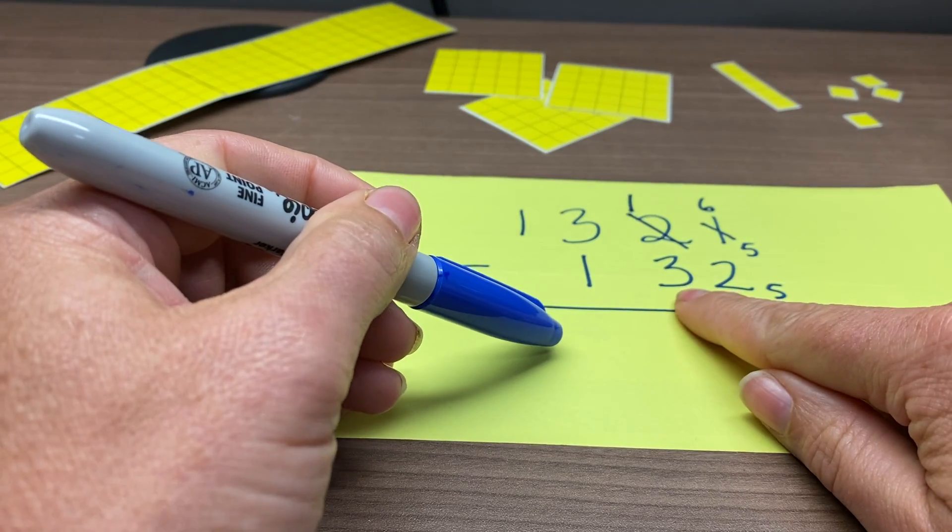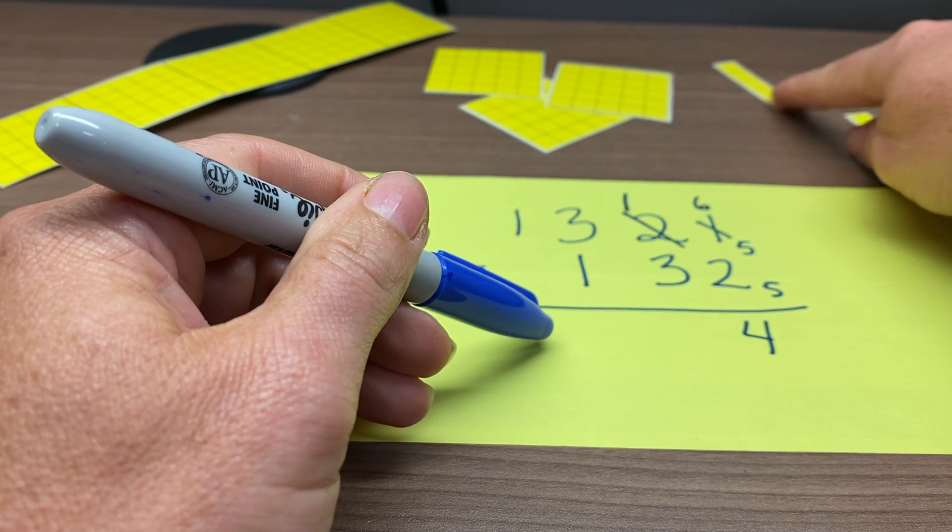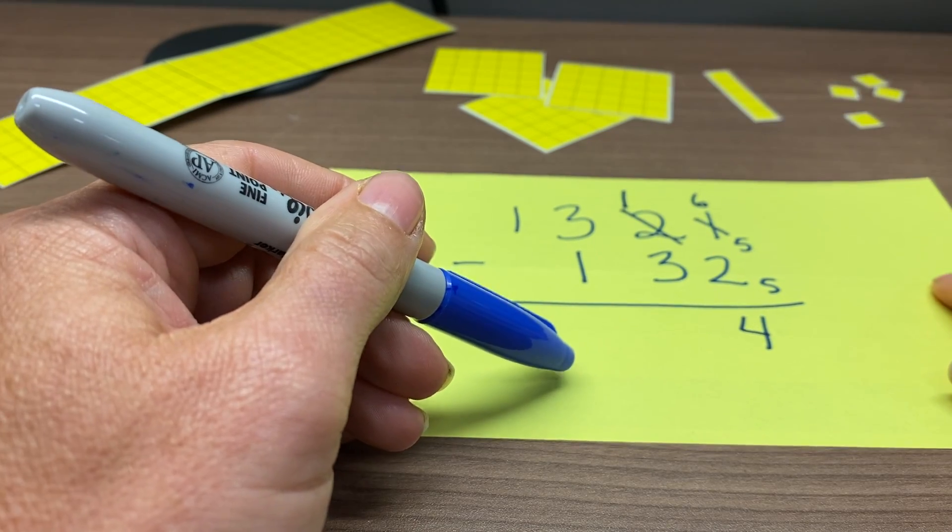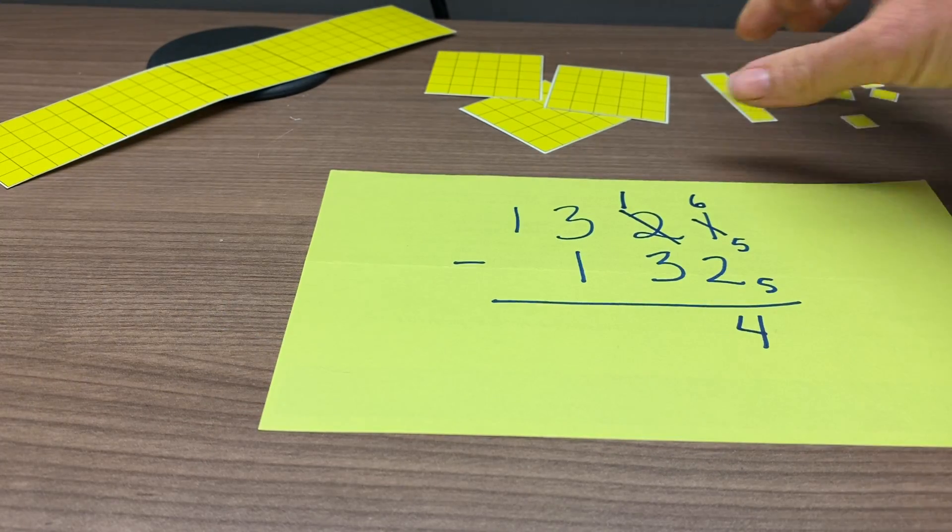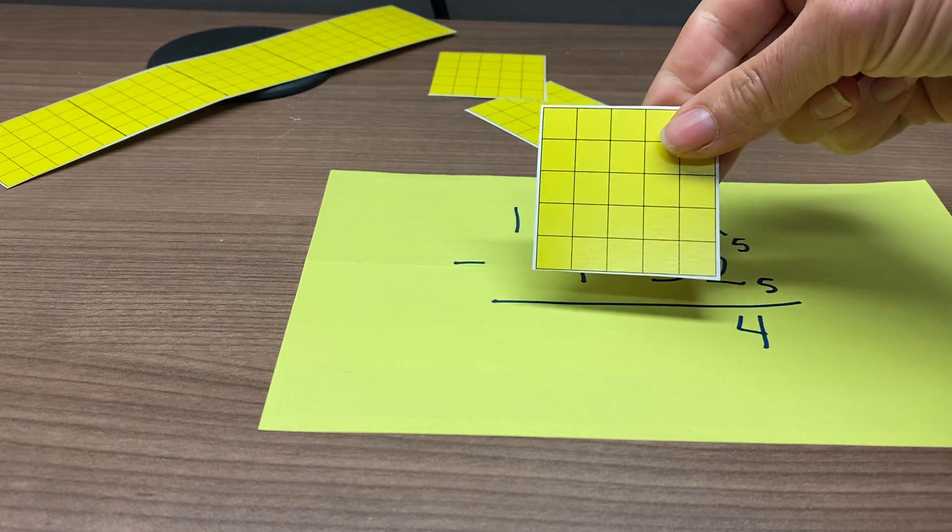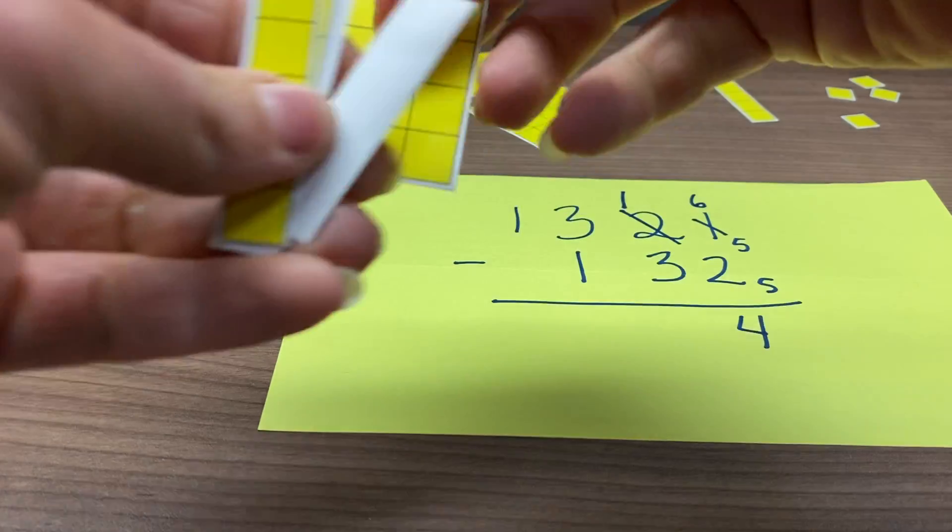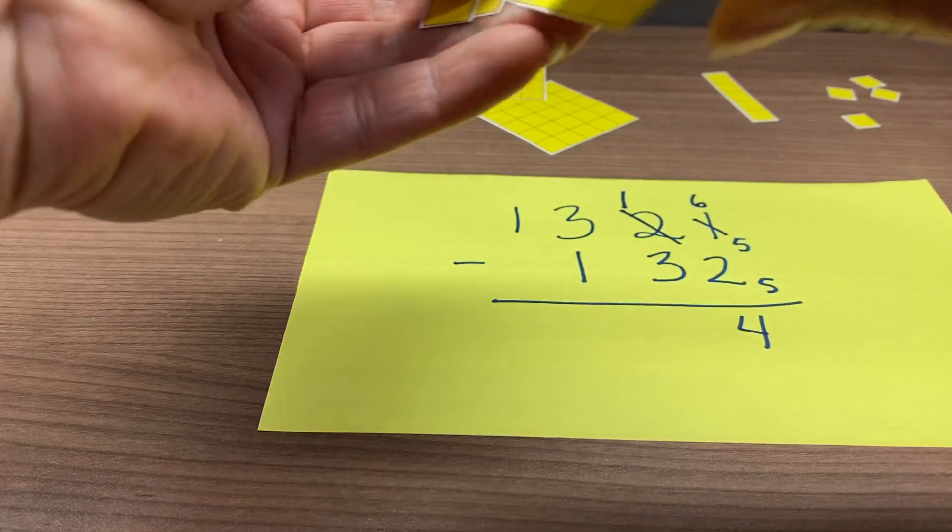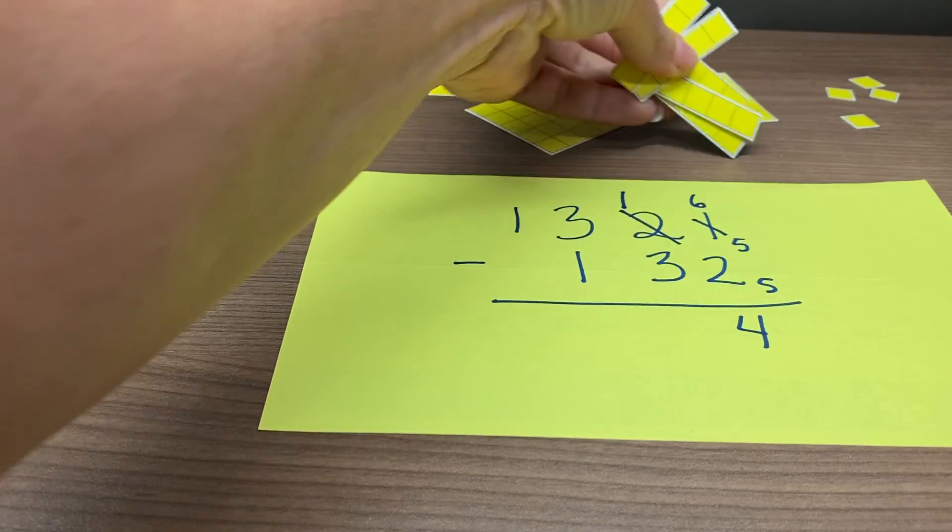Our next step then is to try to take away 3 from this place value, where there is only 1 right at the moment. So what we'll need to do is trade one of the higher ones in for 5 of those. Oops, I've got to turn it over here. So, making a trade here.